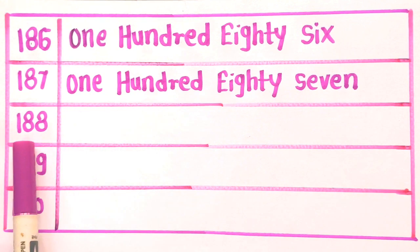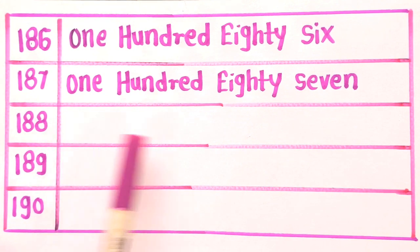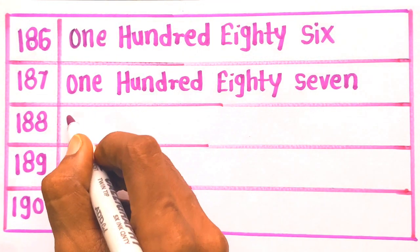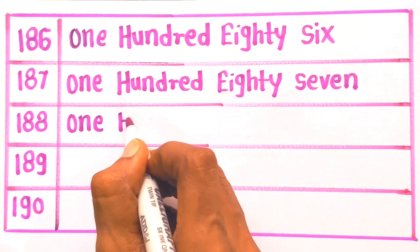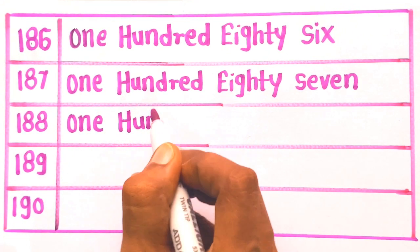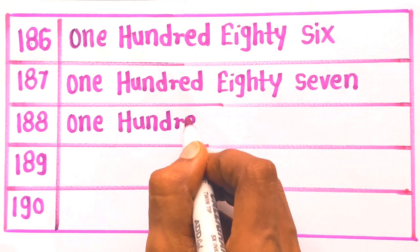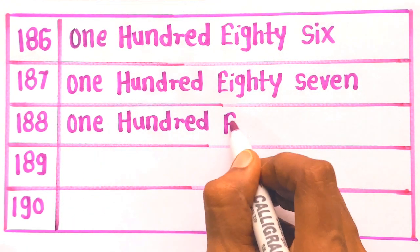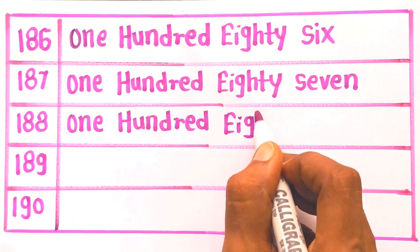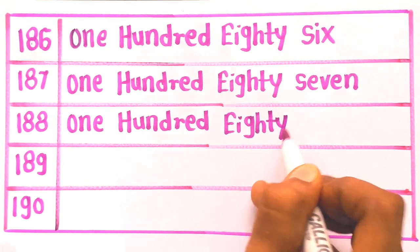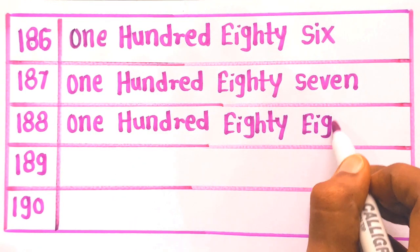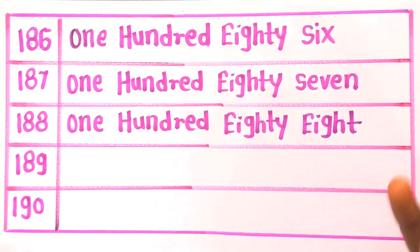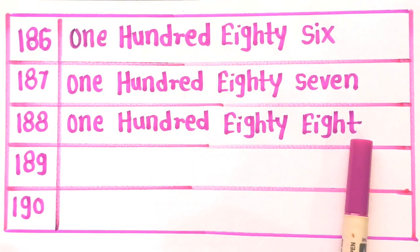Next is 188: O, N, E — 1. H, U, N, D, R, E, D — 100. E, I, G, H, T, Y — 80. E, I, G, H, T — 8. One hundred eighty eight. 188.